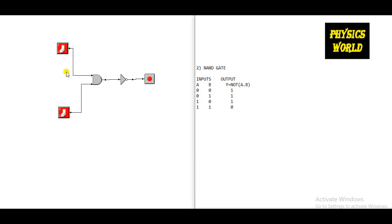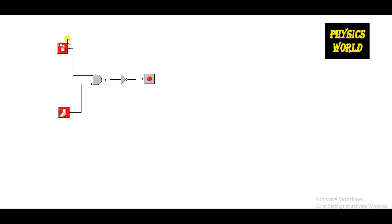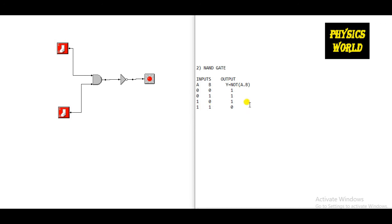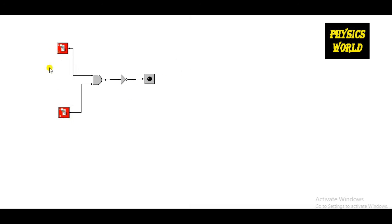For the third condition of the NAND gate, when input A is high and input B is low, the output is high — the relay should glow. Turning A to high — yes, the relay is glowing, so the third condition is verified. For the fourth condition, when both inputs are high, the relay should not glow — output should be zero. Turning both to one — yes, when both are high the relay is not glowing. In all other cases the relay glows. We have verified all the properties of OR, AND, NOR, and NAND gates in digital electronics.